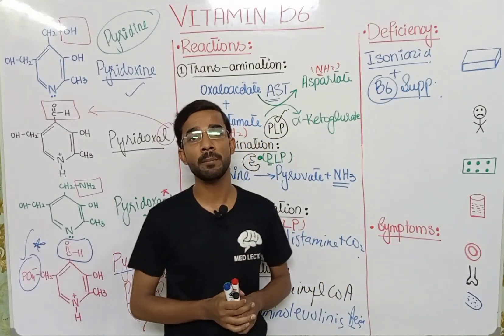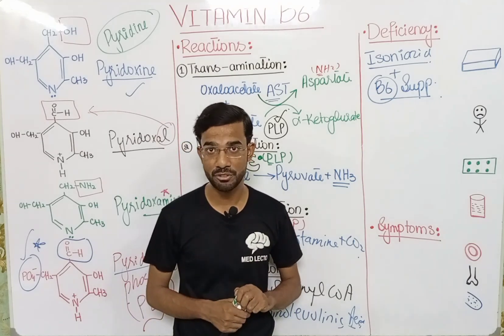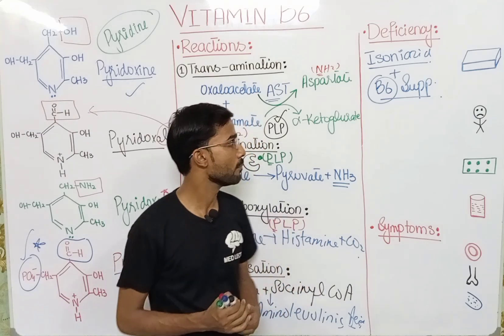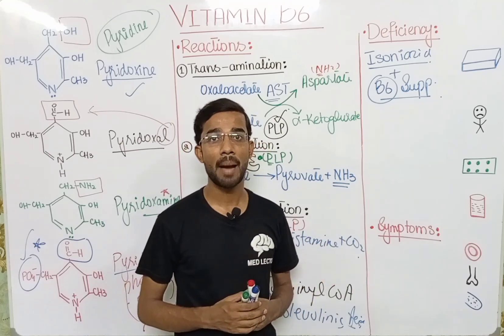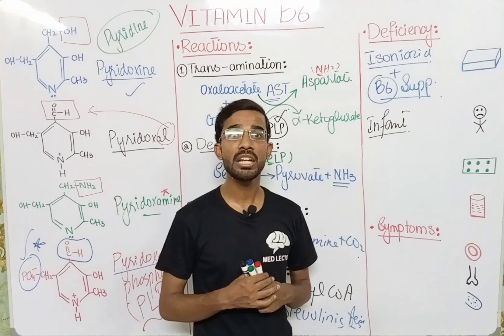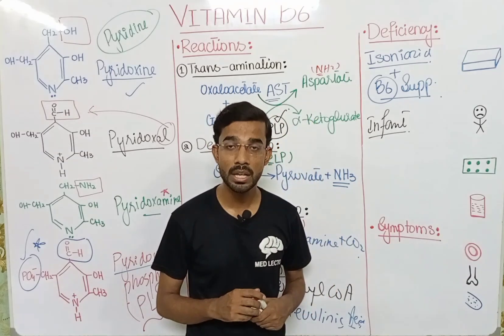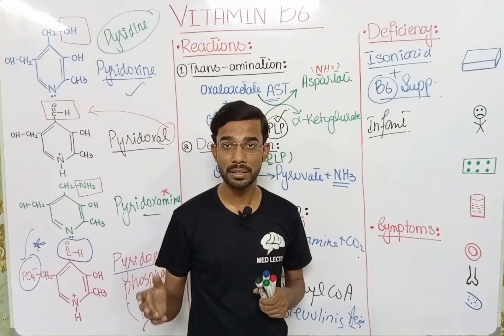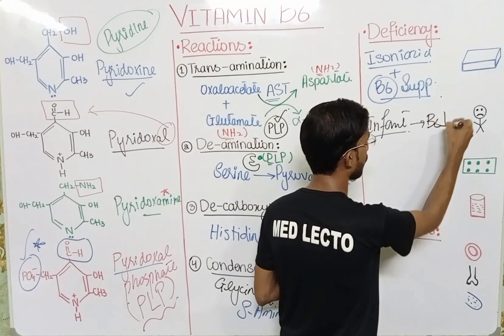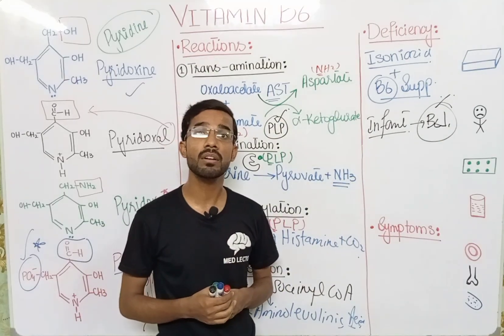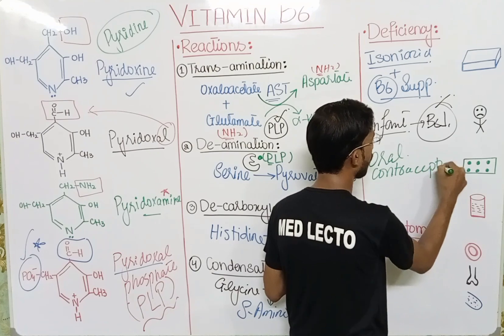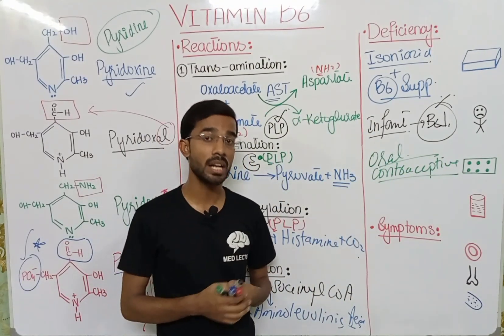Otherwise, you will face Vitamin B6 deficiency, and there is a high chance of peripheral neuropathy, in which you will see numbness and tingling of the hands and feet. Diet deficiency also happens in infants who are fed on milk having a low amount of Vitamin B6. Those females who take oral contraceptives also face Vitamin B6 deficiency. And lastly, those persons who consume alcohol also face Vitamin B6 deficiency.